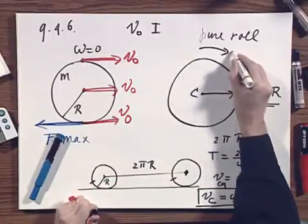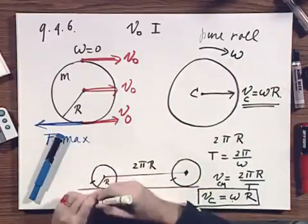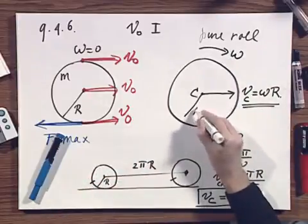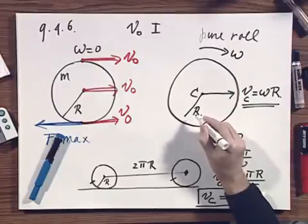We have an angular velocity omega now, and this radius is R.